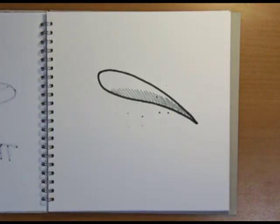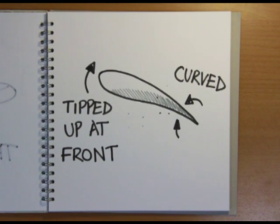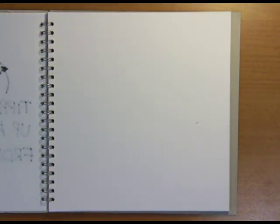If you look at the cross-section of a plane wing, you can see that they're a curved, smooth shape and even mid-flight they're tipped slightly upwards at the front. Lift is created both on the top and bottom surfaces of the wing.